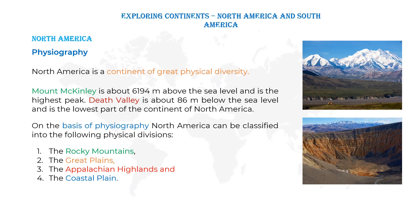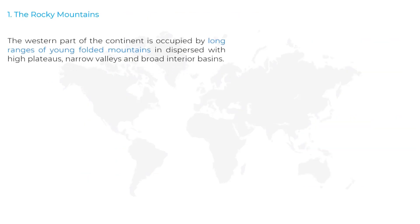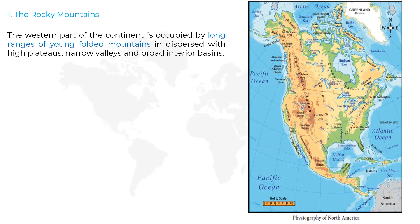First, we are going to learn about the Rocky Mountains. The western part of the continent is occupied by long ranges of young folded mountains interspersed with high plateaus, narrow valleys, and broad interior basins. Look at this map, students — this is the western part of North America. Along this side, many folded mountains are there, and in between the mountains, high plateaus, valleys, and basins are also there.